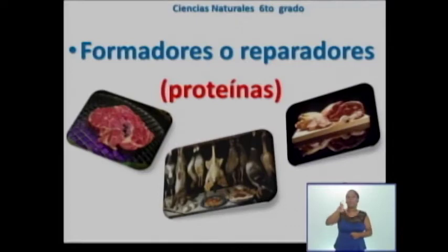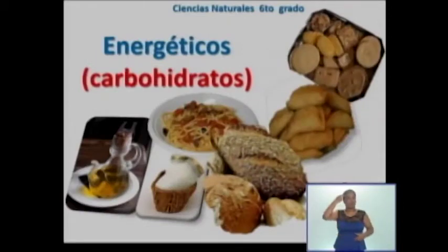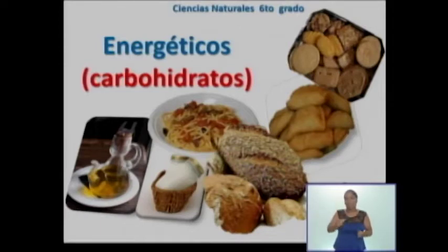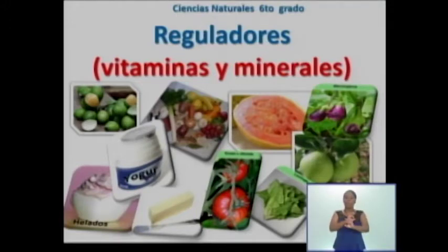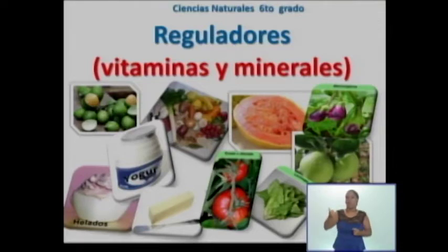Las proteínas nos permiten crecer, formar las defensas y desarrollar órganos sanos. Están los alimentos energéticos; como su nombre lo indica, estos nos proporcionan energía. Ellos son los carbohidratos, presentes en los dulces, caramelos, panes y aceites. De estos alimentos no se puede abusar mucho porque el organismo los almacena en forma de grasa y entonces engordamos. Otros alimentos son ricos en sustancias llamadas vitaminas y minerales. Estos permiten que tengamos una buena digestión, la piel se mantenga sana y fresca y así podamos enfrentar a las infecciones. Estos alimentos también se denominan reguladores, y en este grupo encontramos las frutas frescas, los vegetales, los frijoles, la leche y el yogur.